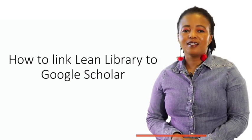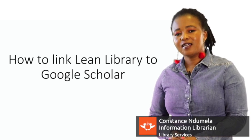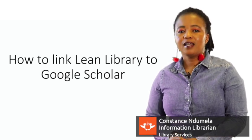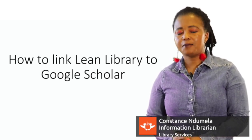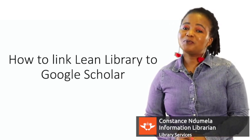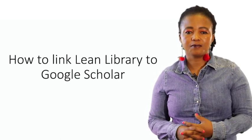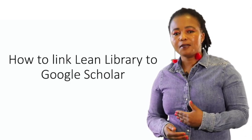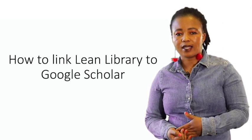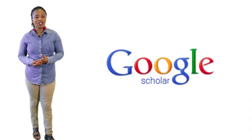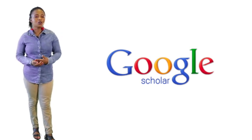Hello everyone. UJ Library has acquired Lean Library, a Sage product. Lean Library is a browser plug-in for users of an academic library. It provides quick and effortless access to the library's electronic resources. Lean Library can only be linked to scholarly search engines, such as Google Scholar. This instructional video guides you to set up Lean Library and also link it with Google Scholar.